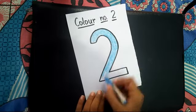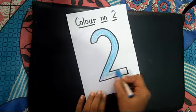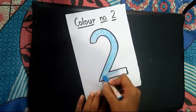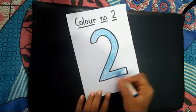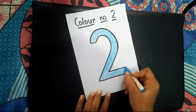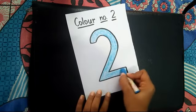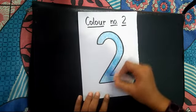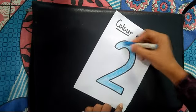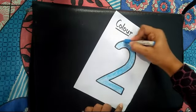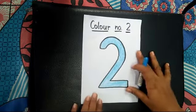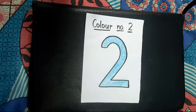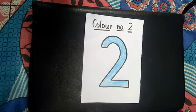And tell me students, in which number we are coloring? We are coloring in number 2. What we are doing? We are coloring in number 2. Very good students! Again, tell me which number is this? This is number 2.